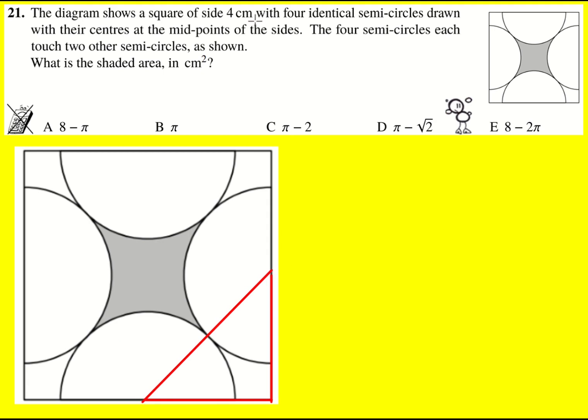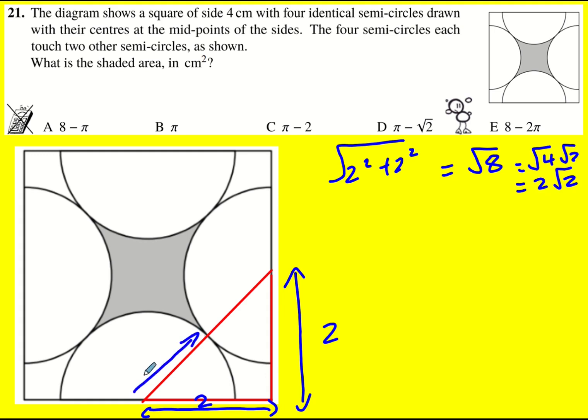And we're told that the square is four centimeters, so we've got the height and the base of the triangle. So two squared plus two squared square rooted using Pythagoras' theorem is going to be root eight, which we can write as root four times root two, or two root two. And that means the radius of a circle is going to be root two.